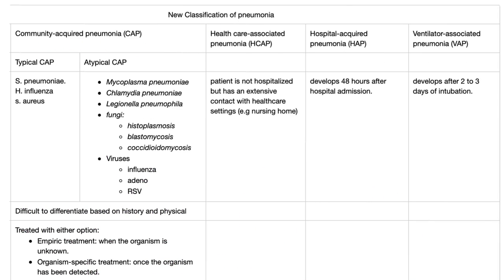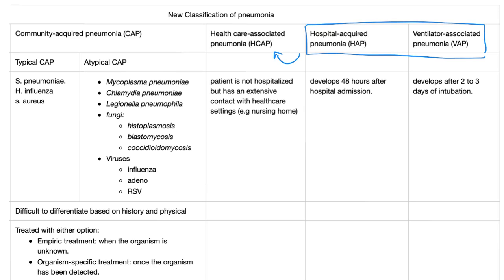The new classification of pneumonia has four types — this is the actual science today. Community acquired pneumonia (typical or atypical), healthcare-associated pneumonia, hospital-acquired pneumonia, and ventilator-associated pneumonia. Hospital-acquired and ventilator-associated pneumonia are technically subtypes of healthcare-associated pneumonia, but for some reason the guidelines list them as separate categories. By healthcare-associated pneumonia they specifically mean a patient who is not hospitalized but has extensive contact with a healthcare setting.